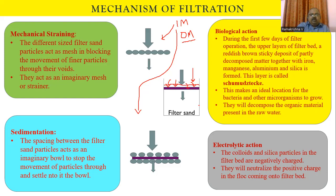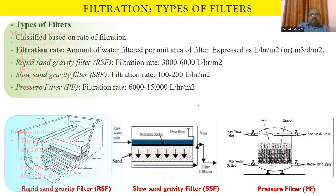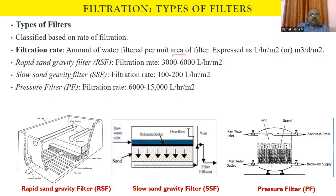There are three types of filters based on the rate of filtration. Filtration rate is defined as the amount of water filtered per unit area — how much water in liters per hour passes through one square meter of filter surface area. The major filters used are: rapid sand gravity filter, slow sand gravity filter — mainly employed in community water treatment systems — and the pressure filter, used at isolated locations for specific purposes.